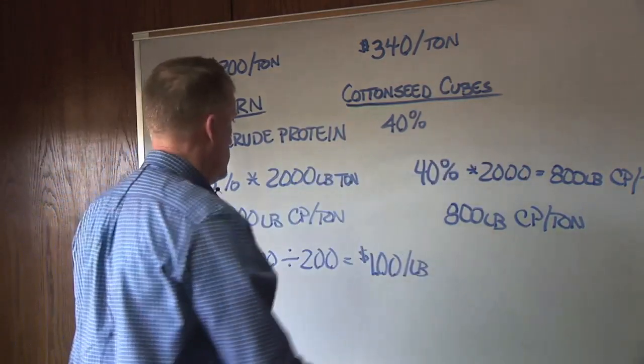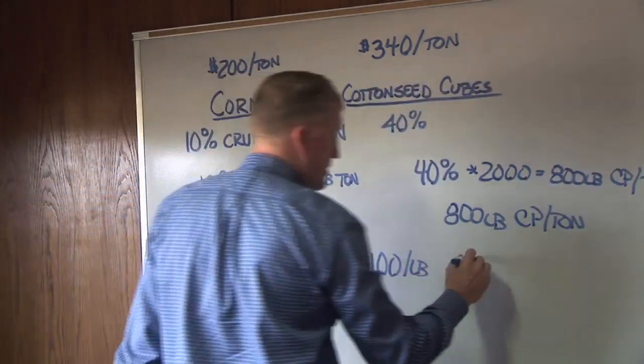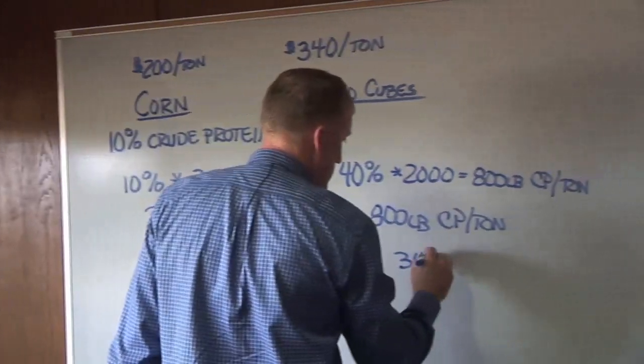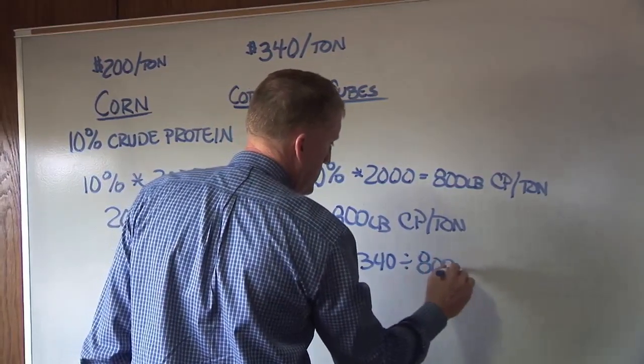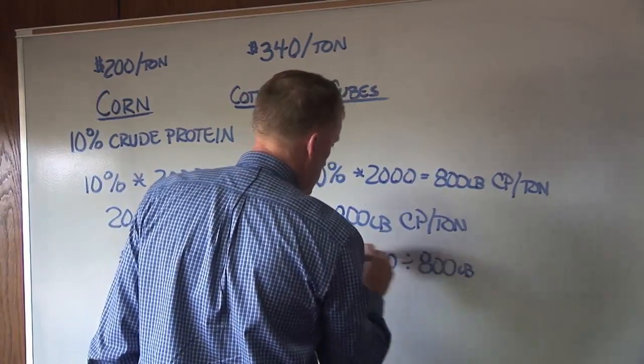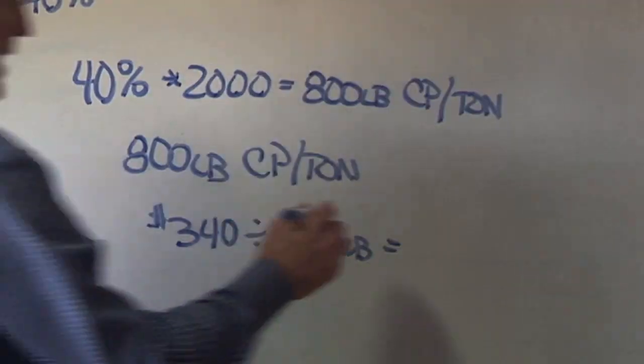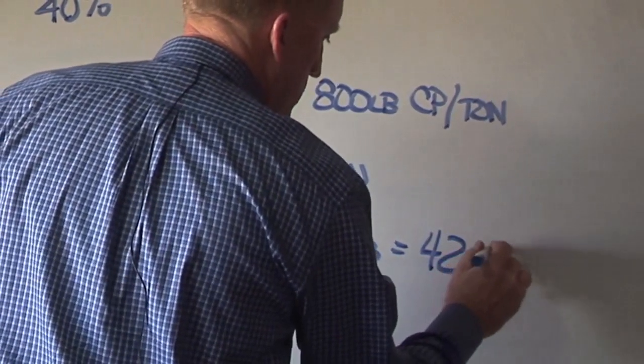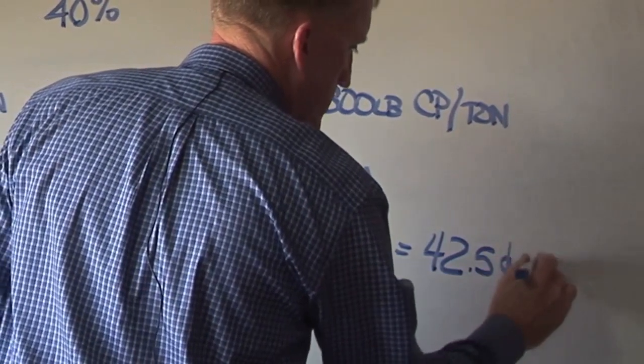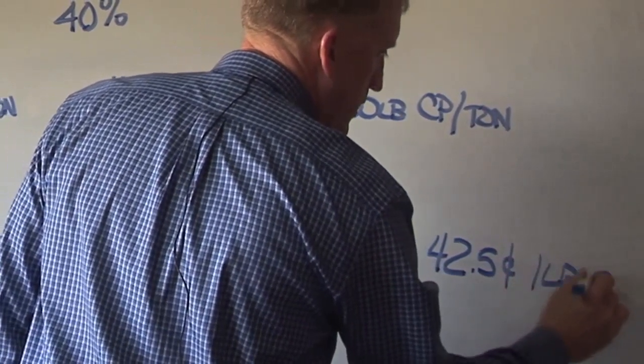So in this case, then we take the $340 per ton, divided by the 800 pounds of protein, and find out that comes out to about 42.5 cents per pound of crude protein.